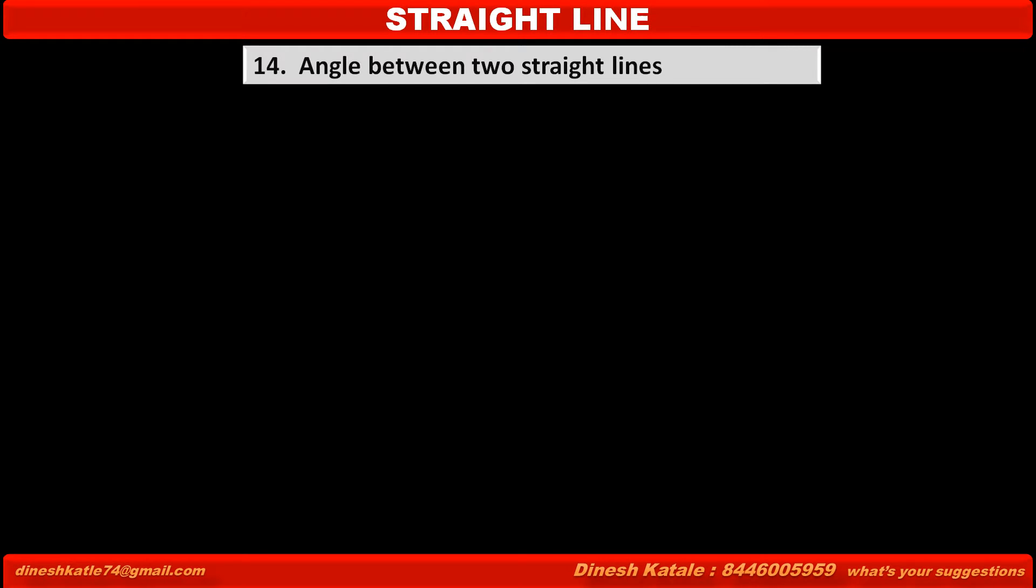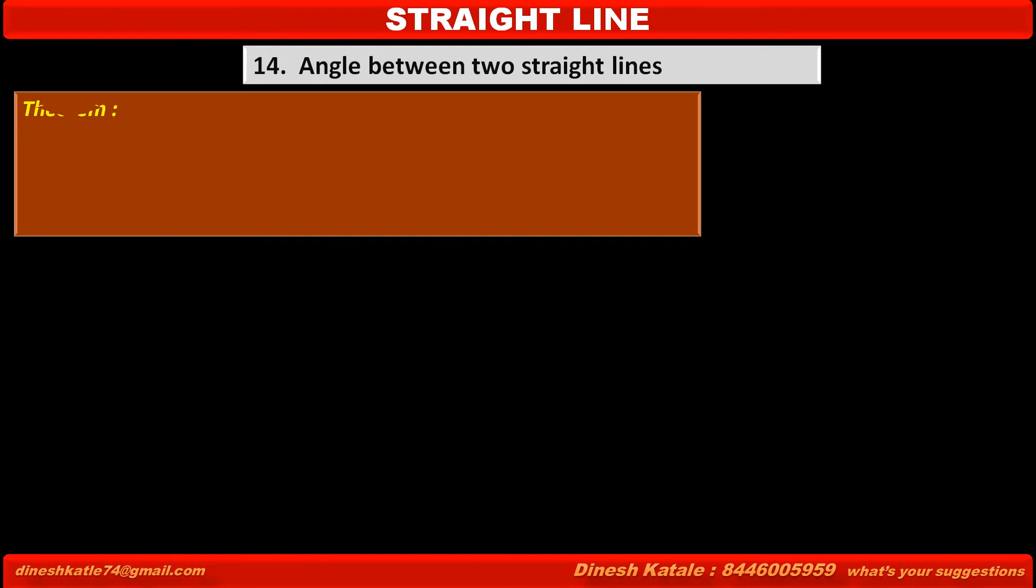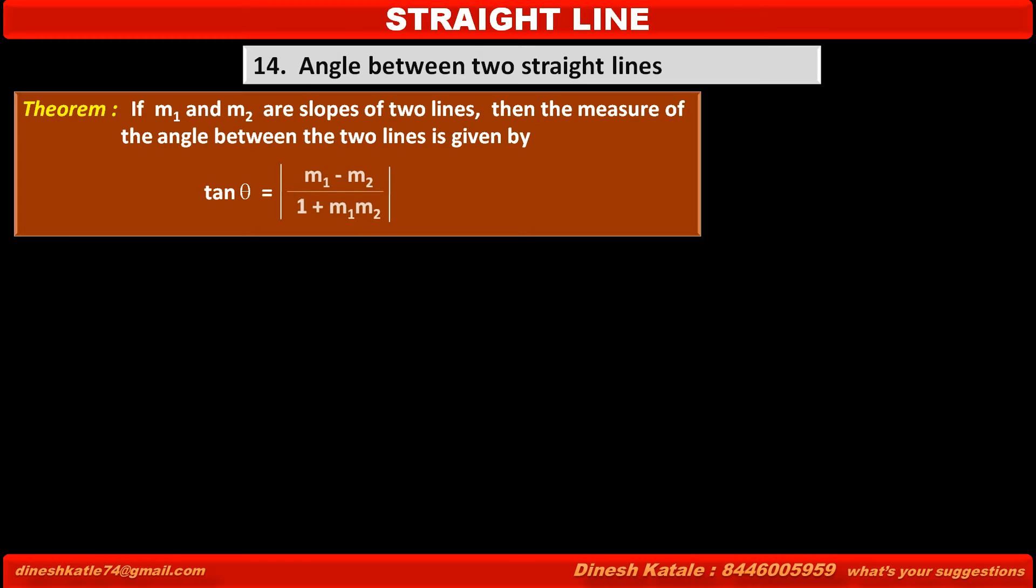Now we have to learn the theorem of angle between two straight lines. See the statement of this theorem: If m₁ and m₂ are slopes of two lines, then the measure of the angle between the two lines is given by tan θ = (m₁ - m₂)/(1 + m₁m₂).